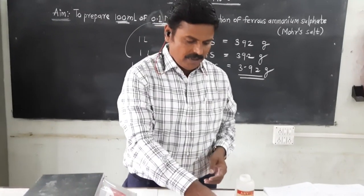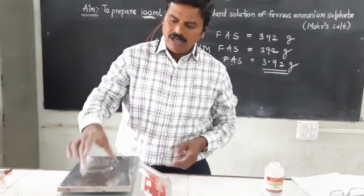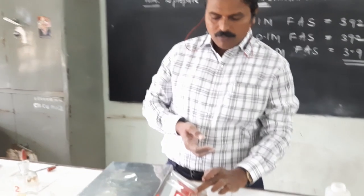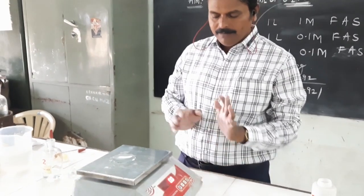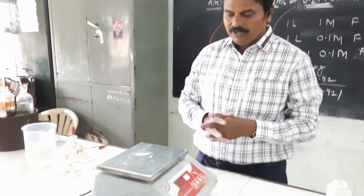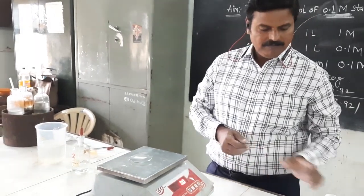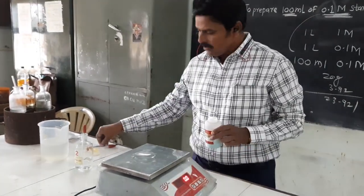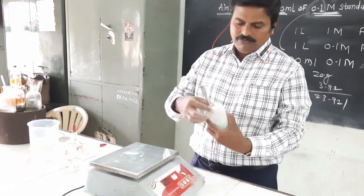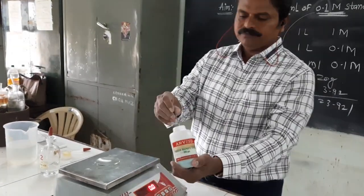First, we have to put the watch glass on the digital balance. Remember to tap zero — after tapping zero, the mass of the watch glass becomes 0 gram. Then we have to put ferrous ammonium sulfate on the watch glass.